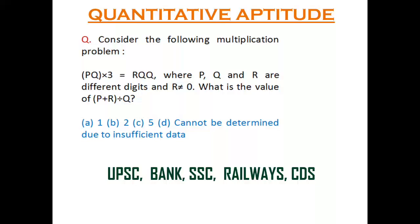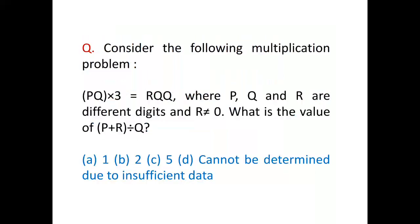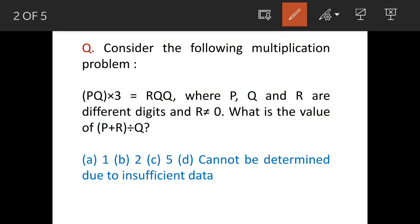We are going to solve a quantitative aptitude question. The question is: consider the following multiplication problem PQ×3 = RQQ, where P, Q and R are different digits and R ≠ 0. What is the value of (P+R)/Q? Options are given: A, B, C, D.